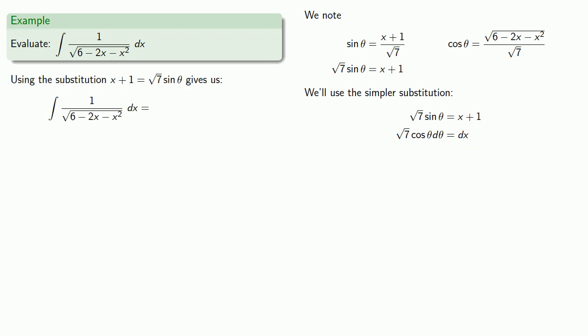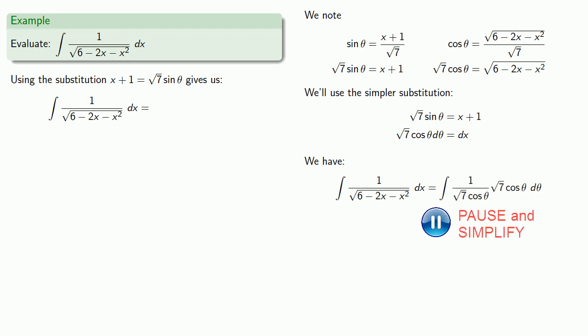Since we want to do something with square root 6 minus 2x minus x squared, we might want to solve our cosine relationship. Making our substitutions, we can simplify, then integrate. We get theta plus C. We started in x, so we should end in x. Theta is arc sine of x plus 1 over square root 7.